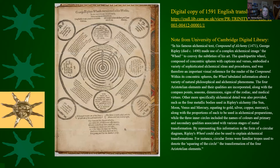Here is a digital copy from the University of Cambridge of that 1591 translation. It's difficult to look at, but it's easier to look at than the Latin version. If you want to see that, I would recommend Rampling's article. In his famous alchemical text the Compound of Alchemy, George Ripley made use of a complex alchemical image — the wheel — to convey the subtleties of his art. The quadripartite wheel, composed of concentric spheres with captions and verses, embodied a variety of sophisticated alchemical ideas and procedures, and was therefore an important visual reference for the reader.